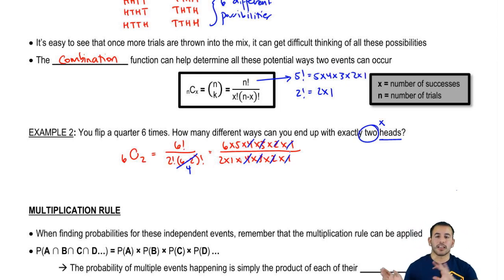So once we collapse all those, whatever's left over kind of moves over, and we get 6 times 5 over 2 times 1. So 6 times 5 is 30, and 2 times 1 is 2. So we end up with 15 possibilities.